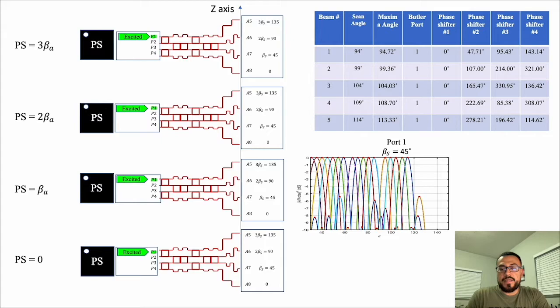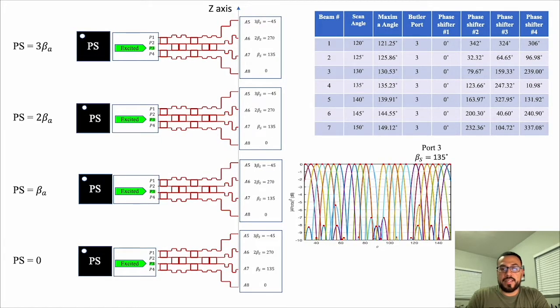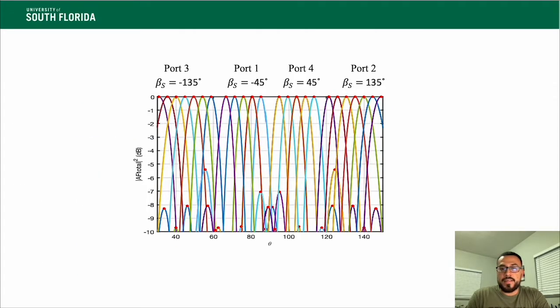Here we have the same scanning capabilities when port 1 is excited. Here we have the scanning capabilities when port 3 is excited. This plot gives the visual aid to help see what scanning location the system can achieve and where potential misreadings can occur.